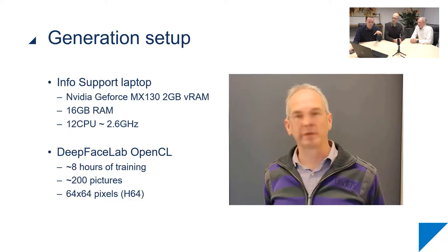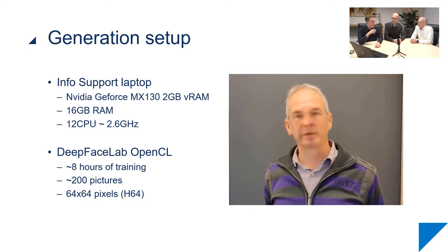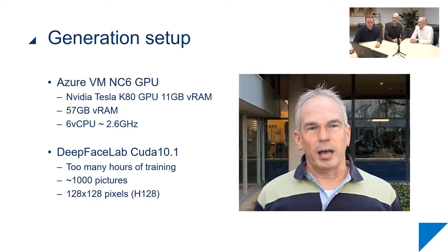We first started with a video of Hans on a regular laptop. We ran the software DeepFaceLab — you can see the specs here. We didn't have that many pictures and used a smaller training size of only 64 by 64 pixels, which is very small. As you can see, the face of Mark Rutte is quite blurred. Lighting from above was also a big issue — in an indoor setting, standing right under a light causes shadows that make it much harder for the model to merge the faces. We ran it for eight hours and still ended up with a fairly bad image.